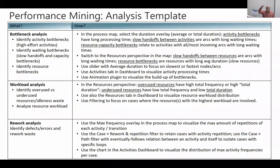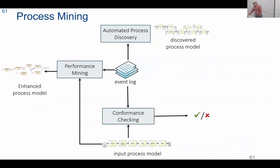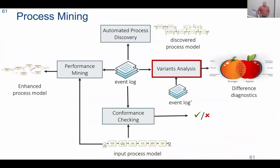This is a table summarizing the different types of analysis for process performance using a process mining tool: bottleneck analysis, workload analysis by switching to the resource perspective, and rework analysis using the rework filter to find repetitions. The right-hand side of the table tells you how to perform each of these operations.